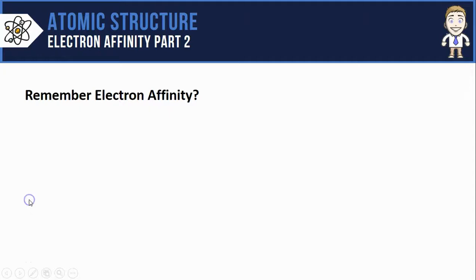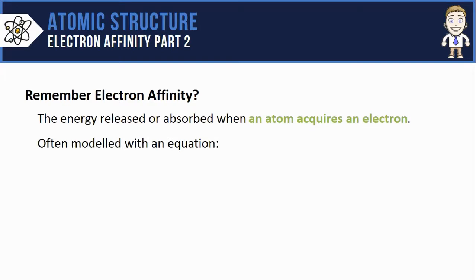First, remember that electron affinity is the energy released or absorbed when an atom acquires an electron. Like this chlorine atom for example, if we gave it an electron it would turn into chlorine minus one and energy would be released in the process.